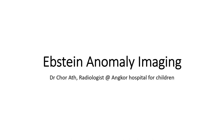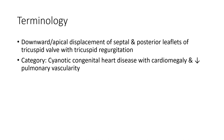Ebstein's Anomaly imaging. This condition involves downward apical displacement of the septal and posterior leaflets of the tricuspid valve with tricuspid regurgitation. Category: cyanotic congenital heart disease with cardiomegaly and decreased pulmonary vascularity.